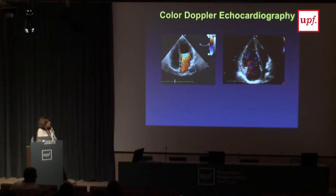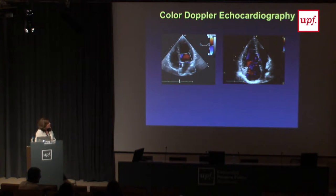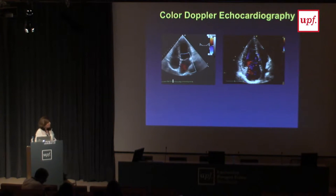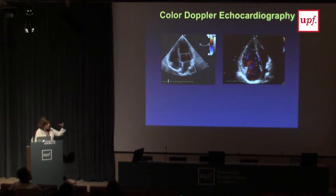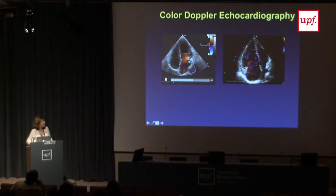Another modality derived from pulse wave Doppler is color Doppler. As I tell my students, this is echo with colors added so we can understand it better. Normal flow within the heart is laminar, so we see similar velocities. By agreement, it is red when flow goes towards the transducer and blue when it goes away. This shows normal flow across the mitral valve — when the mitral valve opens, flow goes from the left atrium to the left ventricle and is depicted in red.